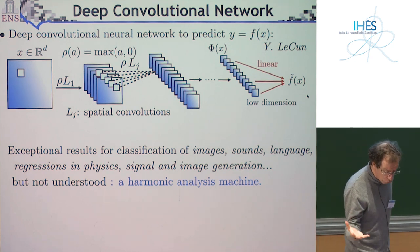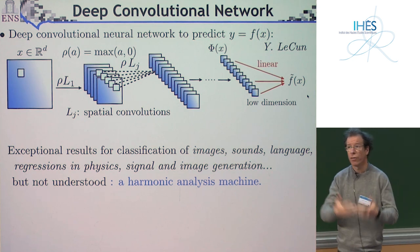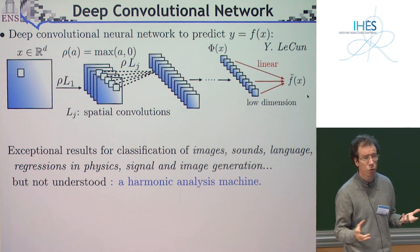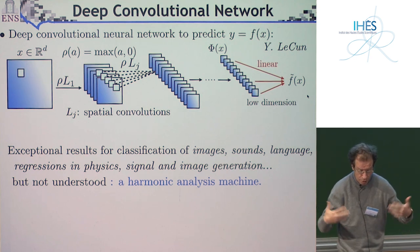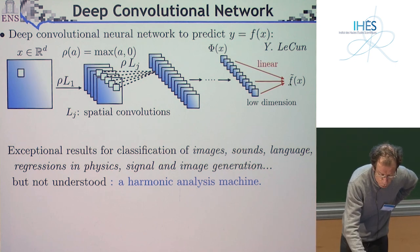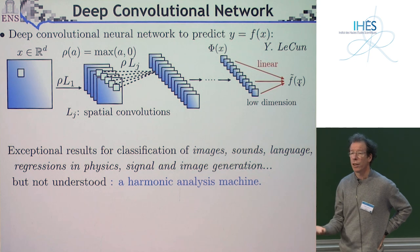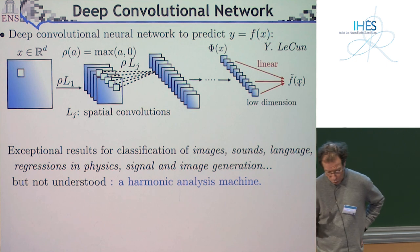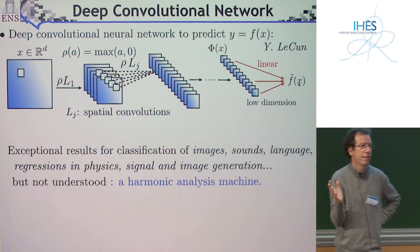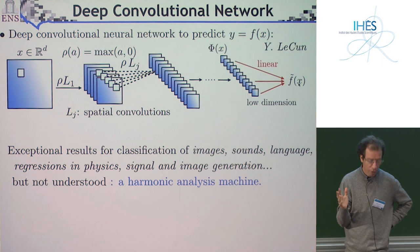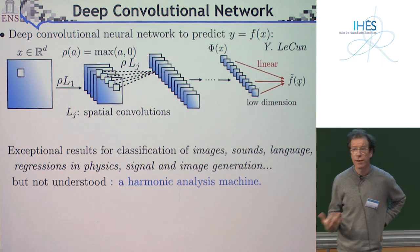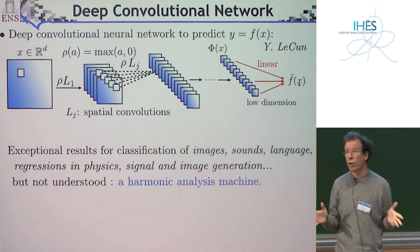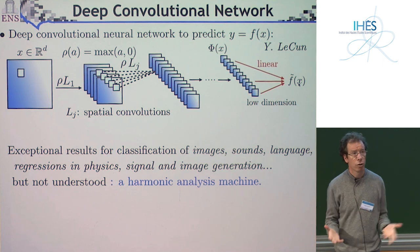How do you train this network, which typically has hundreds of millions of parameters—the parameters of all your convolutional kernels? You update them to get the best possible approximation of the true function f on the training data, using an optimization algorithm. What was extremely surprising since around 2010 is that these kinds of machines have remarkable approximation capabilities on a very wide range of applications.